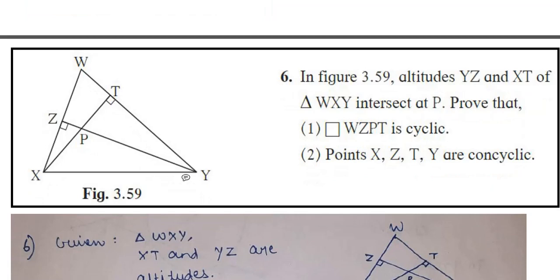Moving to the next question. Now, question number 6 of practice set 3.4. A triangle has been given. There are two altitudes. Altitudes mean height. Height is always perpendicular. I have to prove that this quadrilateral WZPT, I have to prove this is cyclic. And then I have to prove that X, Z, T and Y are concyclic. Concyclic means all these points lie on the same circle. You might think how do I go about this question. Let's look at the solution. It's very simple.